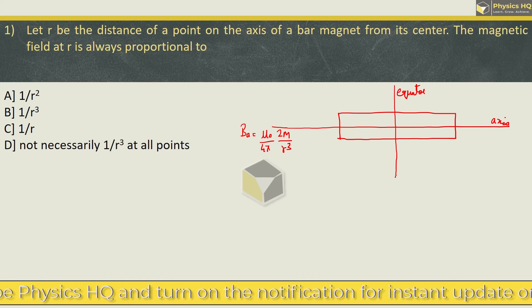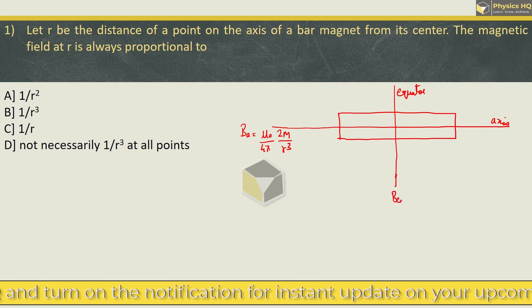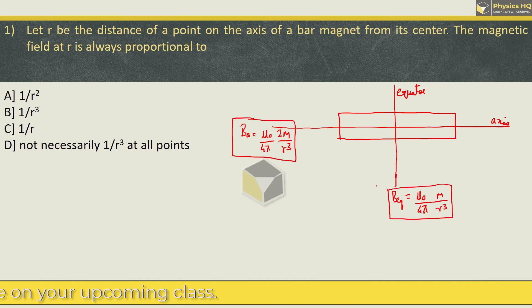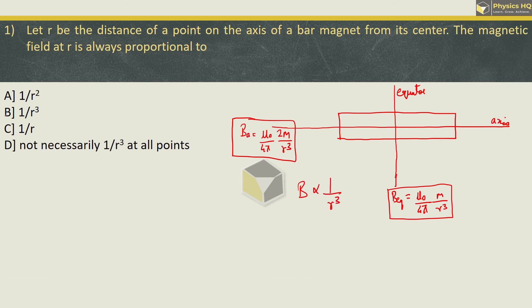And if you want to find magnetic field at any point on the equator, then in that case it is given by μ₀ upon 4π times m upon R cubed. So in both cases you find that magnetic field is inversely proportional to R cubed. So here option B is the correct option.